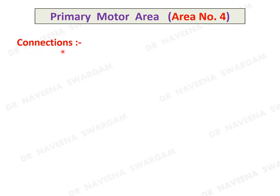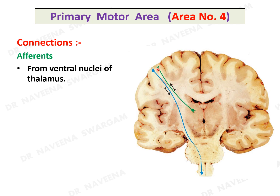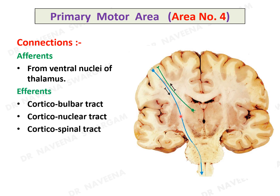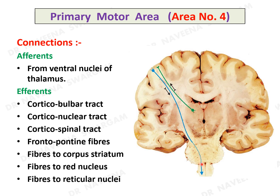Connections of the primary motor area: major afferents come from the ventral nuclei of the thalamus. It also receives afferents from other cortical areas of the same hemisphere through association fibers and from the opposite hemisphere through commissural fibers. Efferents form corticobulbar, corticonuclear, and corticospinal tracts which pass through the corona radiata, internal capsule, and brain stem to reach the spinal cord. Few efferents form frontopontine fibers. It also sends fibers to the corpus striatum of the basal ganglia, red nucleus of the midbrain, and reticular nuclei of the brain stem.